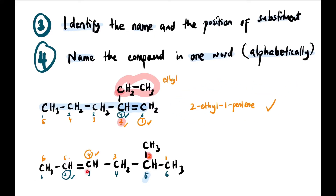Yang bawah ni pula — kita sudah setuju tadi, nama parent dia adalah 2-hexene. And then, dia ada anak di carbon yang ke-5, which is methyl. So, nama lengkap dia adalah 5-methyl-2-hexene.